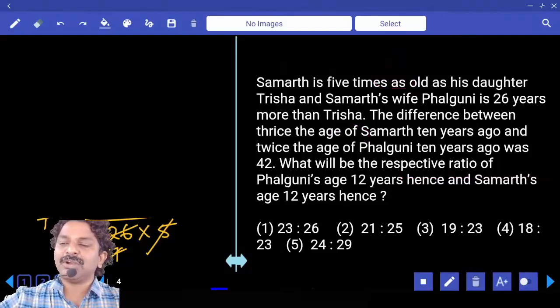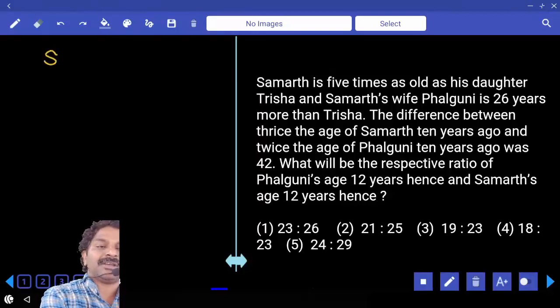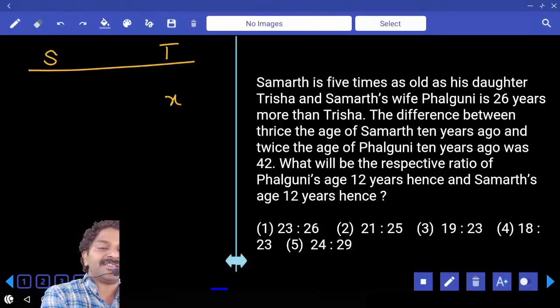Samarth is 5 times as old as his daughter Trisha. We have Samarth and then Trisha. How many times? 5 times. If Trisha's age is X, Samarth's age becomes 5X.